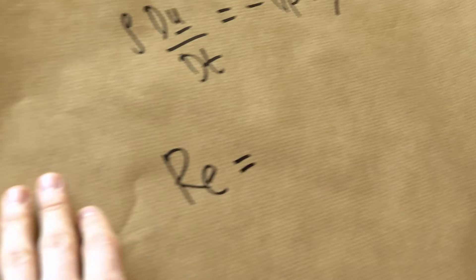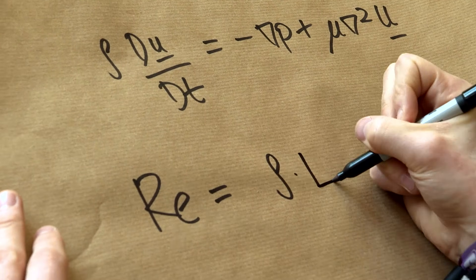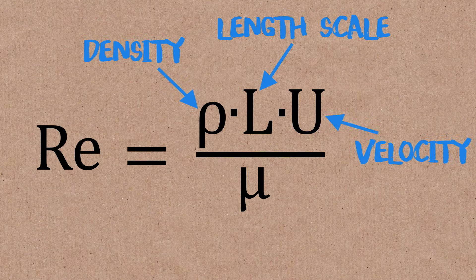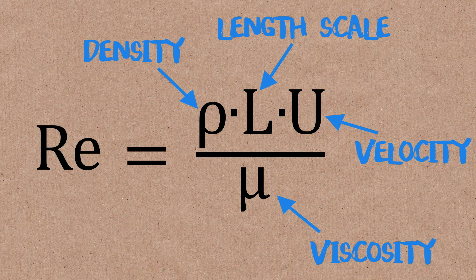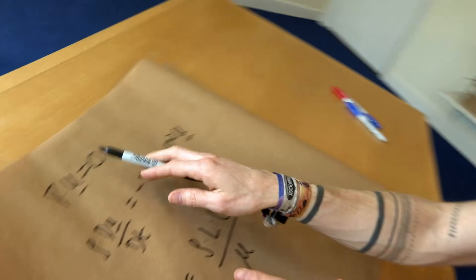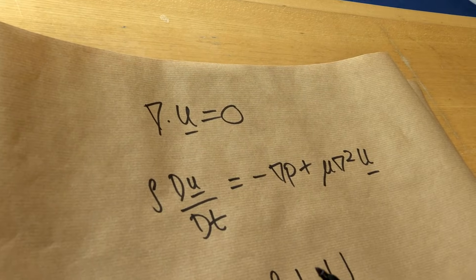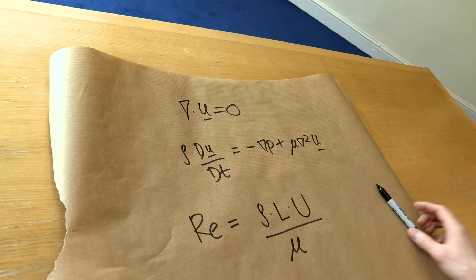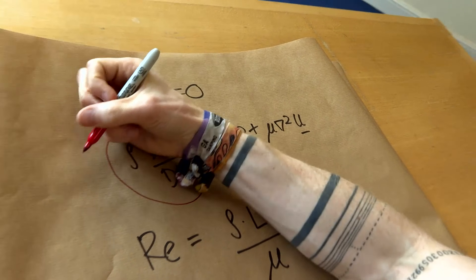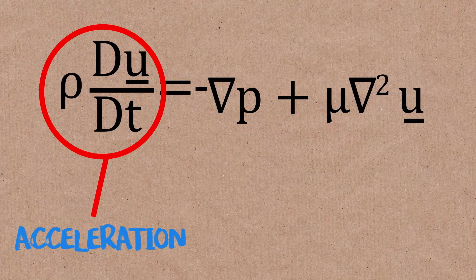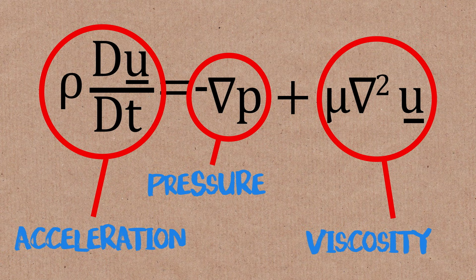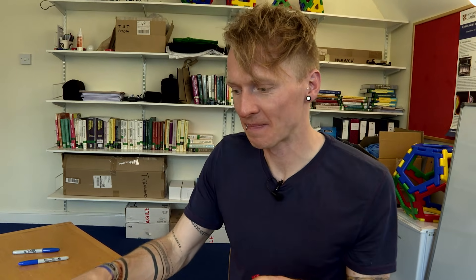Now we want to get the Reynolds number. We label it Re, and it's going to be our density rho times a length scale L times a velocity U, divided by viscosity mu. Why do we even need a Reynolds number? Equation one is nice and simple and doesn't change with the Reynolds number discussion. But equation two has three bits: this term is acceleration because it's density times a change in velocity, this one is pressure, and then this one is viscosity. Viscosity is like an internal friction - your layers of fluid sliding over one another and interacting.